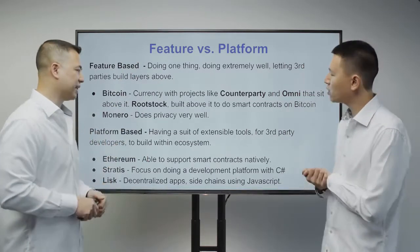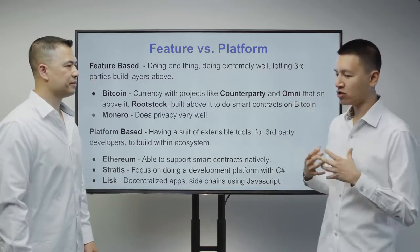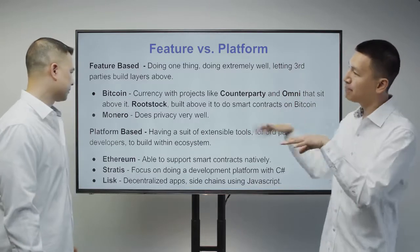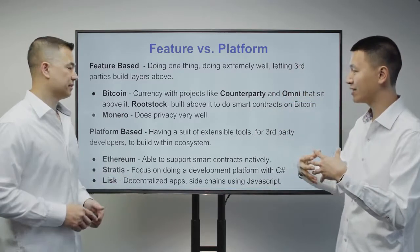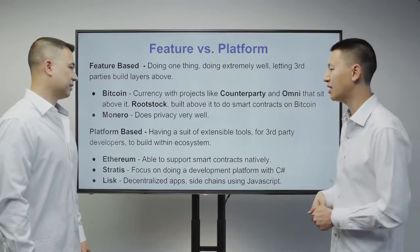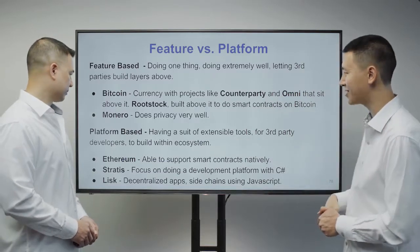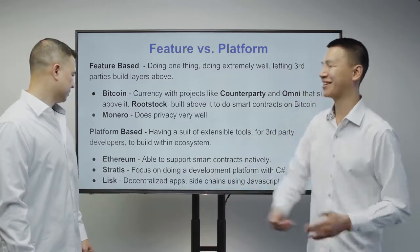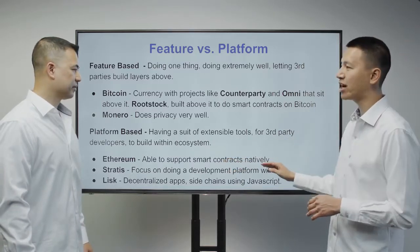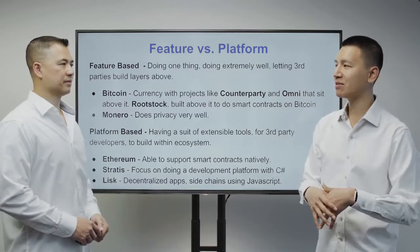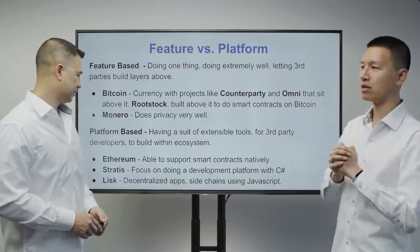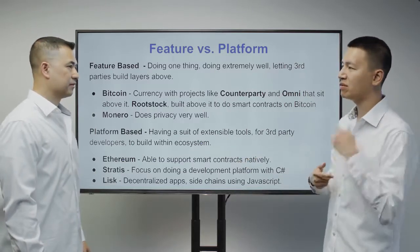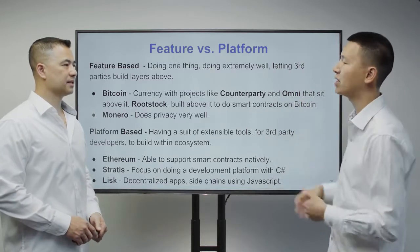A platform-based project creates a tool set so you can build within the coin or project itself — not on top of it, but inside it. The biggest example is Ethereum, the second most valuable cryptocurrency after Bitcoin at about $2 billion. Ethereum supports smart contracts and allows people to build within the Ethereum ecosystem. There are others like Stratus and Lisk, but Ethereum is far bigger — about 10 to 100 times larger than any of those.